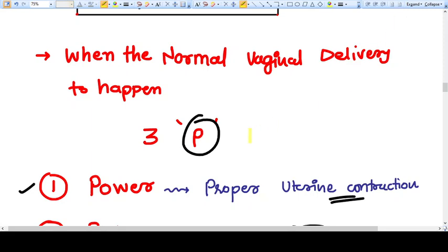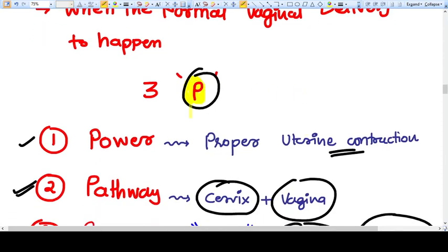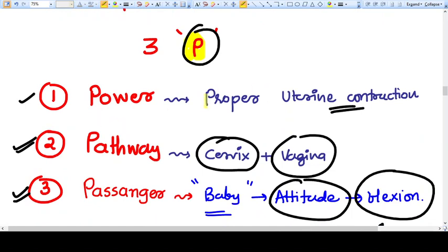Hello everyone, in this video we are going to particularly talk about cervical effacement. First of all, you must know that for normal vaginal delivery to happen, you need three P's. The first P is power, and that means proper, good, and strong uterine contractions.